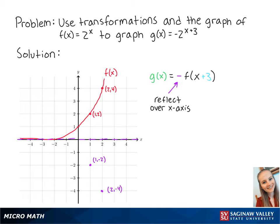Connecting these points gets the graph of negative f of x. Adding 3 to x means that we will shift this new graph 3 units to the left.